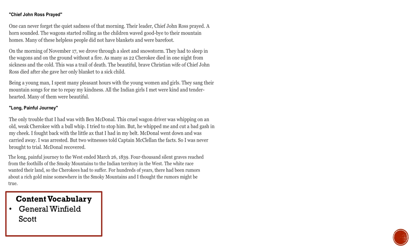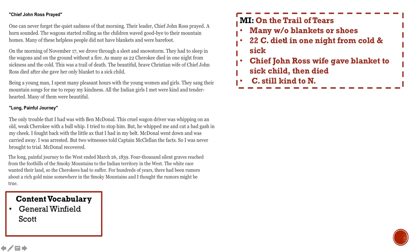The beautiful, brave, Christian wife of Chief John Ross died after she gave her only blanket to a sick child. Being a young man, he spent many pleasant hours with the young women and girls. They sang their mountain songs for him, and to repay his kindness, all of the Indian girls he met were kind and tender-hearted. That's a lot to take in about what it was like on the Trail of Tears. Key details: many had no blankets or shoes; he witnessed 22 Cherokee die in one night in that snowstorm. The most powerful moment: Chief John Ross's wife gave her only blanket to a sick child and then died.